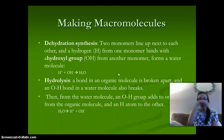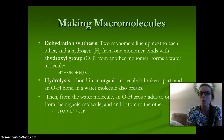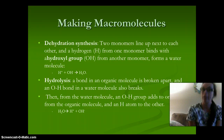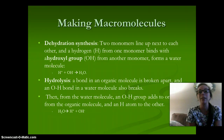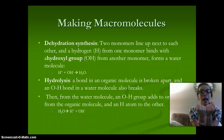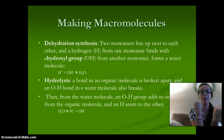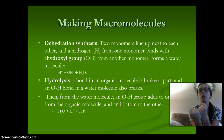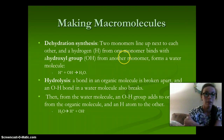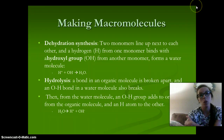So making macromolecules — how do we make them? Dehydration synthesis. We take two monomers, line them up together, and we have a hydrogen from one monomer that binds to the OH of another group to form water. So H plus OH yields water, and these form our large molecules.